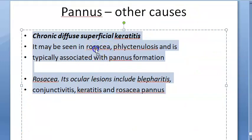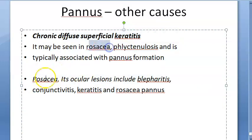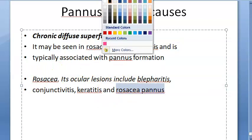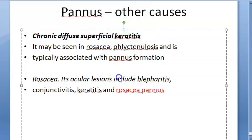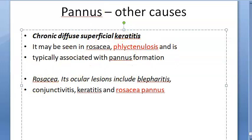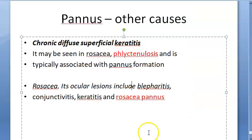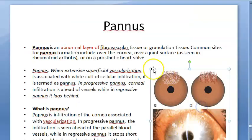Other causes of pannus in the eye include rosacea keratitis, which causes rosacea pannus, and phlyctenulosis, which can also cause pannus. The cause we just discussed is trachoma.